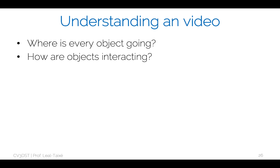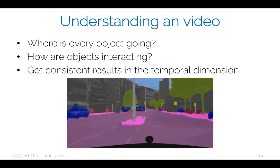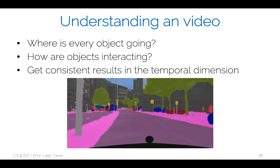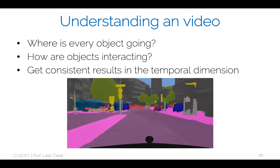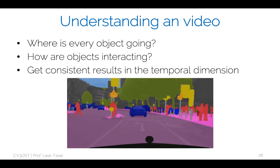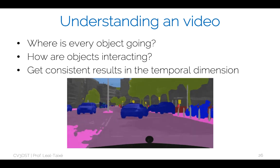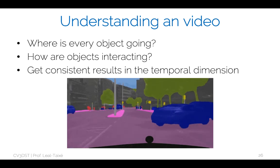We want to understand where every object is going, how they're interacting, and try to predict future trajectories — this is super important for autonomous driving. At the same time, we want to get detection, segmentation, and semantic results that are consistent in the temporal domain — something we'll also talk about.